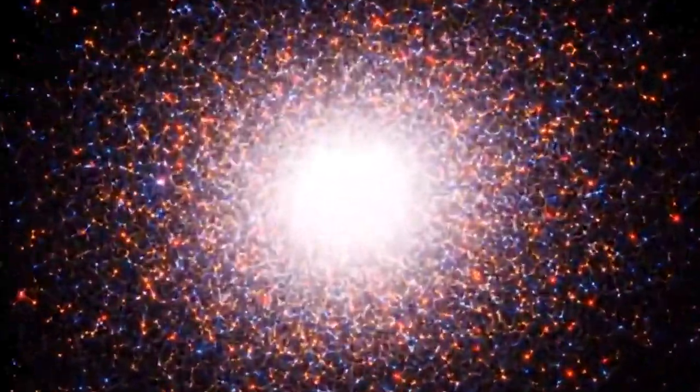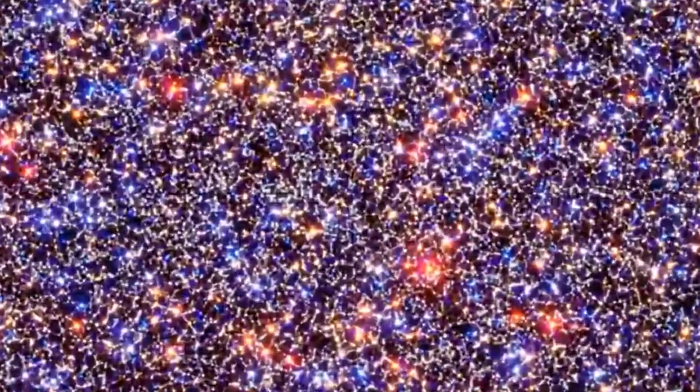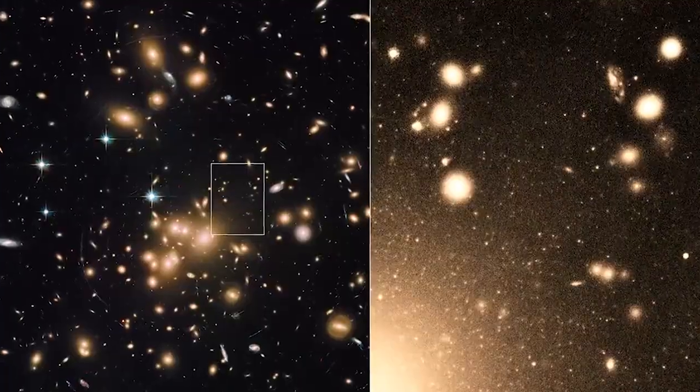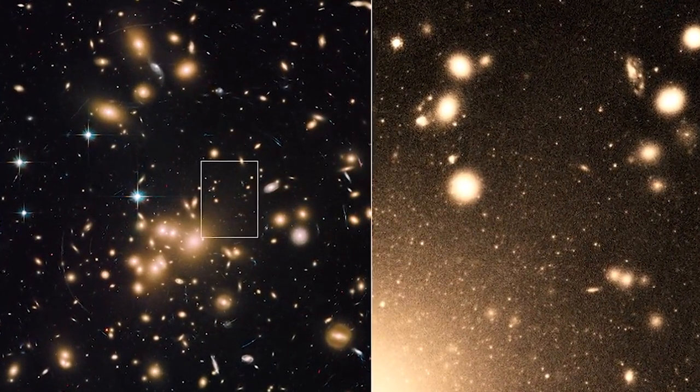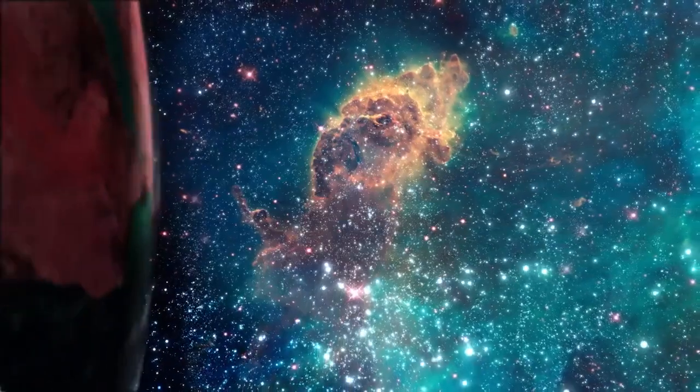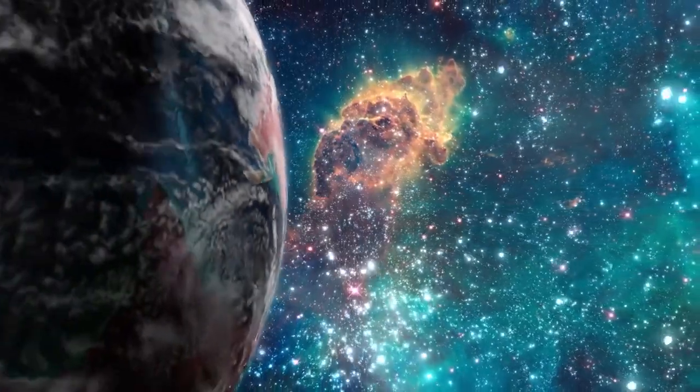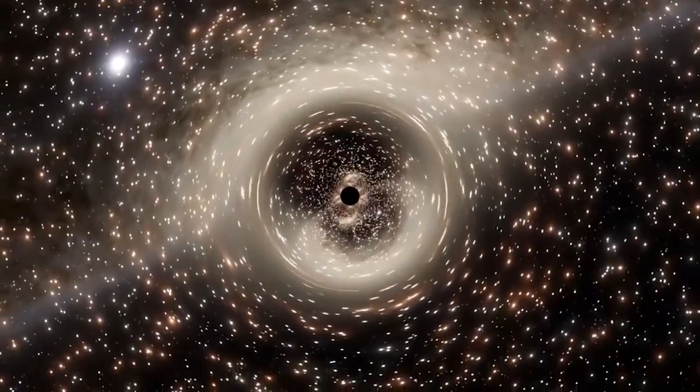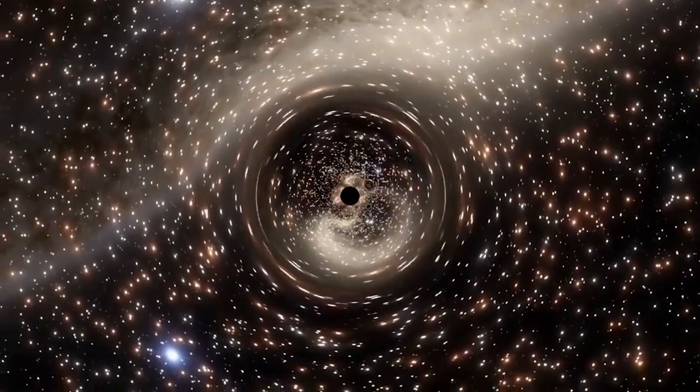Globular clusters are groups of about a million stars that formed around the same time and are close together. The masses of the stars in these clusters can be used to keep track of time in the universe. Scientists can guess when the globular clusters started to form. The stars in the oldest globular clusters are not 0.7 times less massive than the sun, which means that they are between 11 and 18 billion years old.